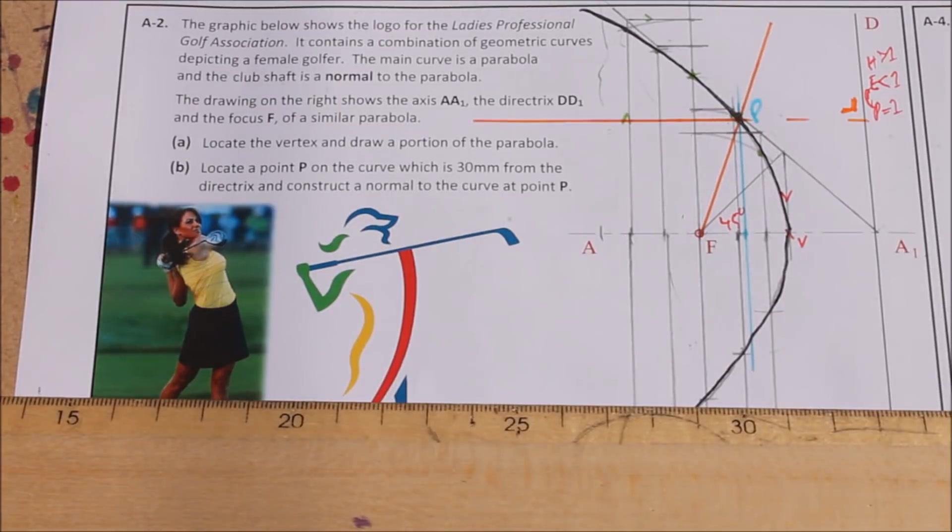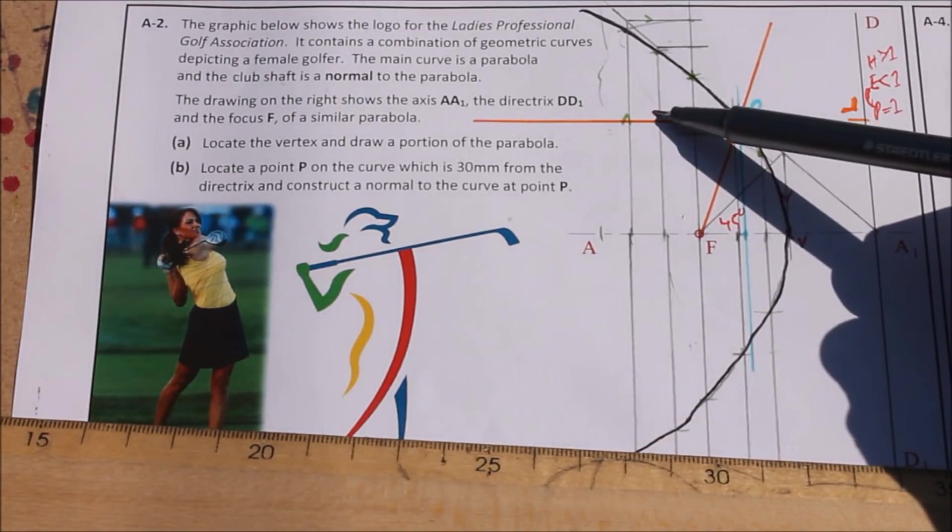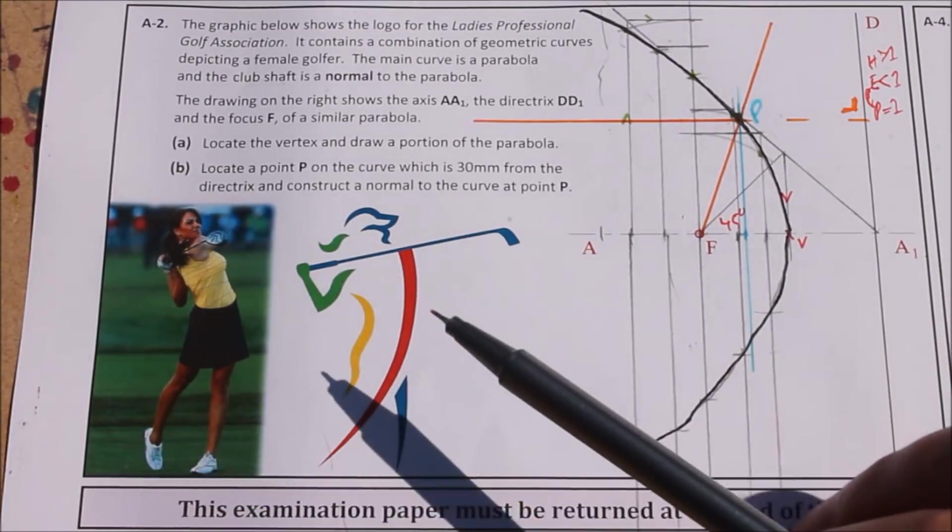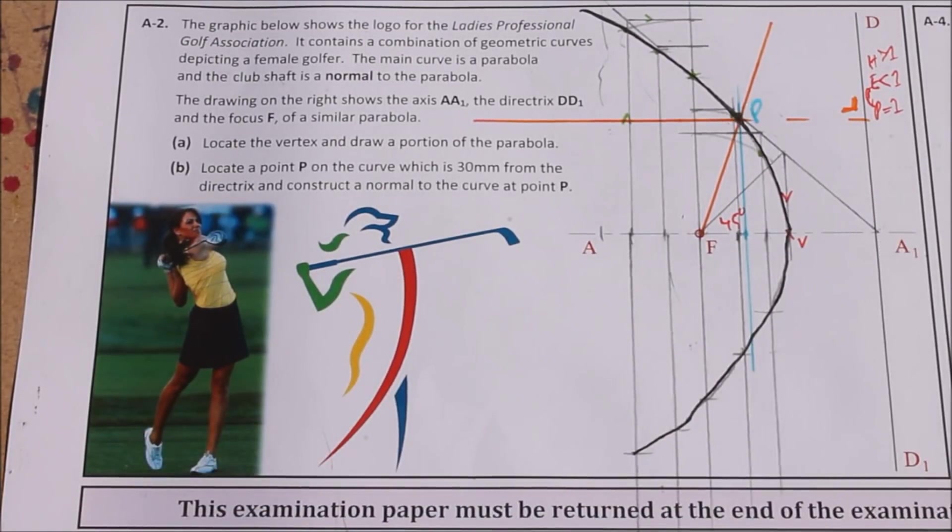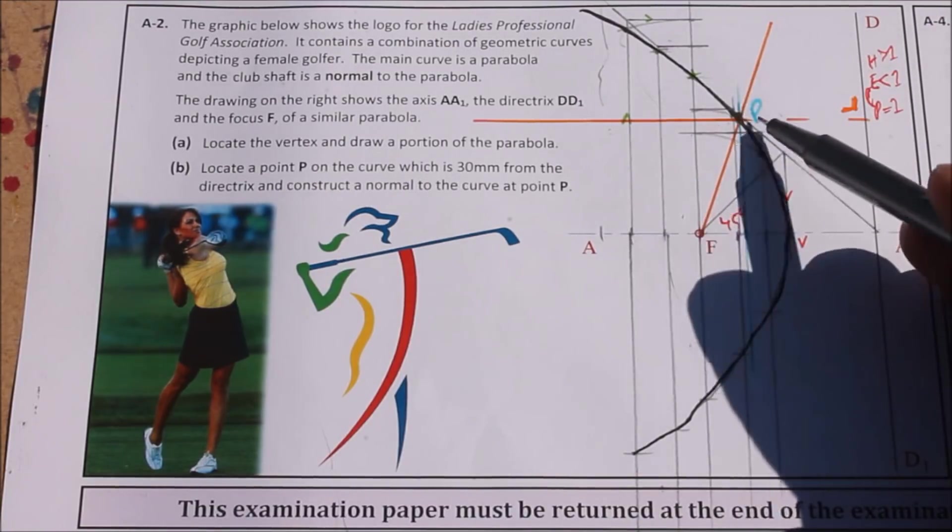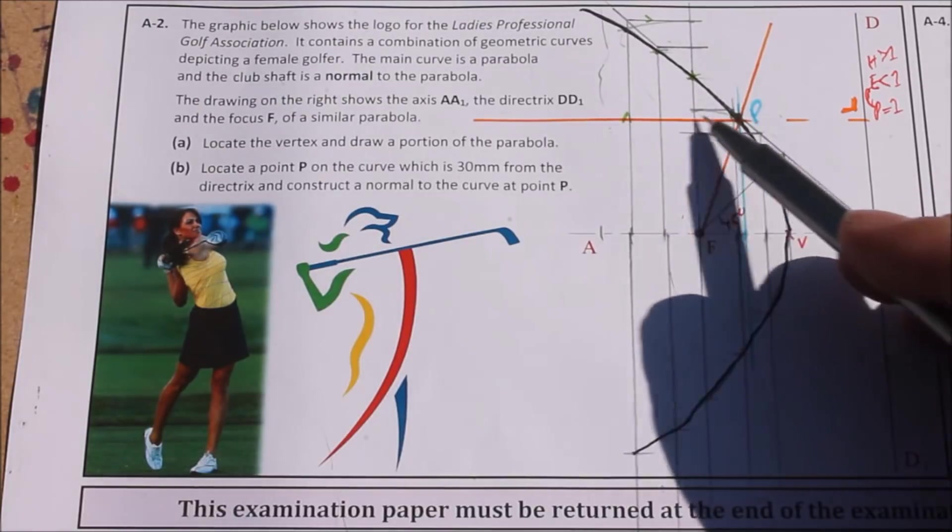Now, normally, if they'd asked for a tangent, you would bisect the angle that your two lines are making here to get a tangent to the curve. But in this case, it's a normal and a normal is always perpendicular to a tangent at right angles to it. So what we're going to do is bisect the angle that our line here perpendicular to the directrix and our line from the focal point makes.